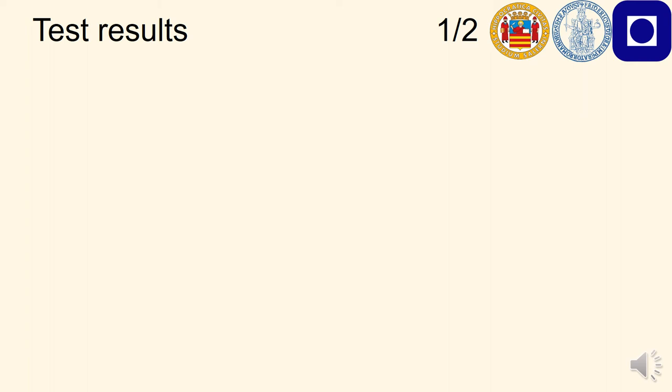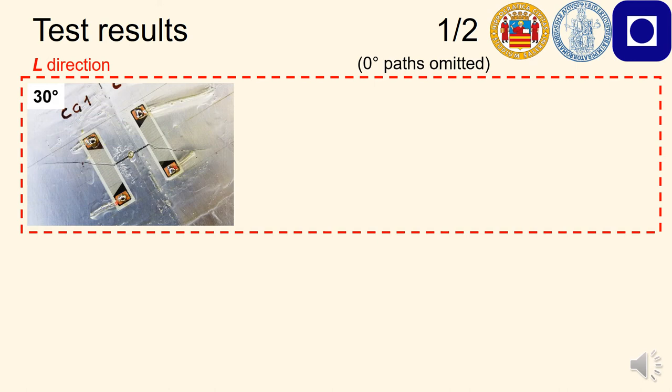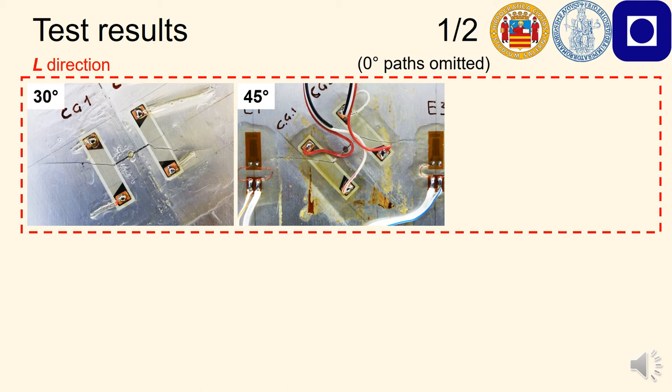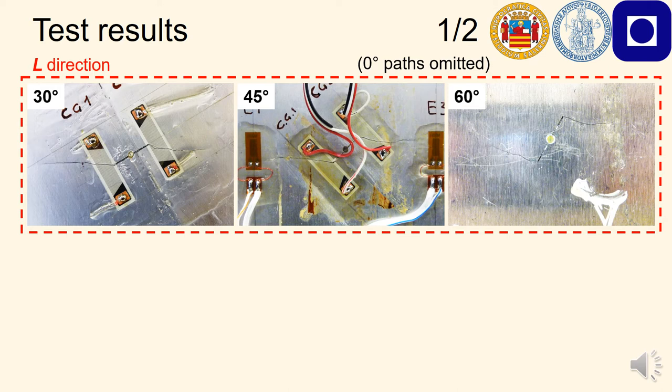Here, we can see the results in terms of crack paths. We are not showing the paths for the zero degree specimens for the simple reason that the cracks propagated in the initial notch plane as expectable. These are the crack paths for the L rolling direction for the 30, 45, and 60 degrees specimens. We can see that the cracks propagated always perpendicularly to the loading direction, irrespective of the angle of the initial notch. This was expectable, as was also expectable that the cracks propagated from the two notch tips with slightly curved and smooth paths.